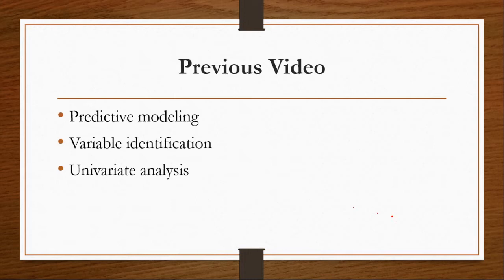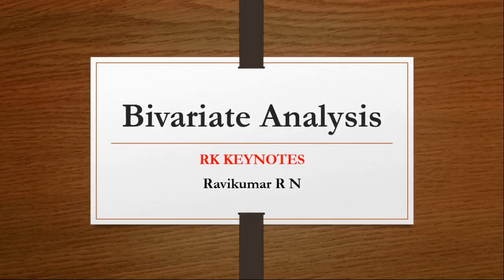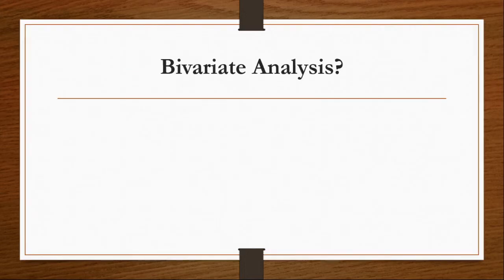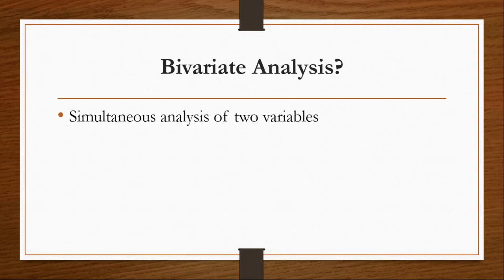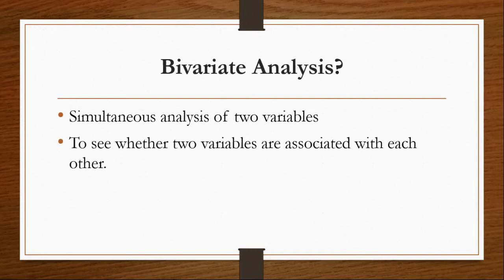Hello viewers, welcome to RK Keynotes. In the predictive modeling module, in the previous videos we have seen what is predictive modeling and its types, how to identify variables, and we have performed univariate analysis for continuous and categorical variables. In today's video we'll talk about bivariate analysis. In univariate analysis we took one single variable and analyzed it. In bivariate analysis we're going to take two variables, compare them, and check how those two variables are related — whether they are dependent or independent. We're going to perform simultaneous analysis on two variables to see how they are associated with each other.